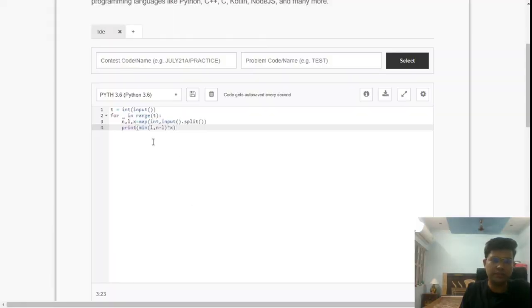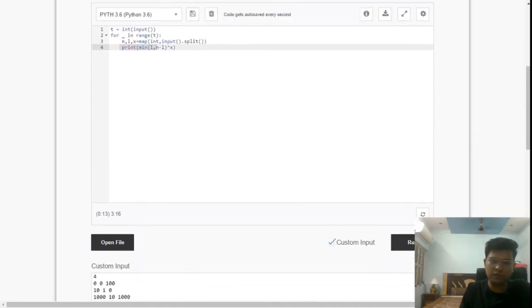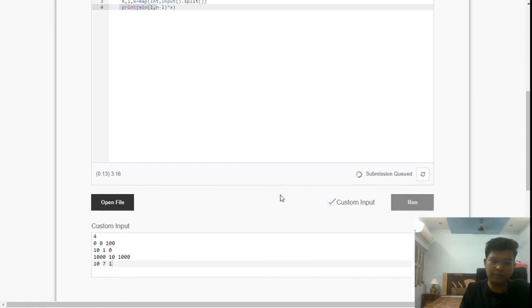Now let us understand the Python way of writing the code. First we'll enter the number of test cases. For each test case what we need to get is the three values: N, L, and X. We'll map these values, take the input and spread it as we do in Python. And then what we will do, we'll simply print the formula that we get: minimum of L and N minus L multiplied with X. Let us try to run this particular code for this custom input and see.